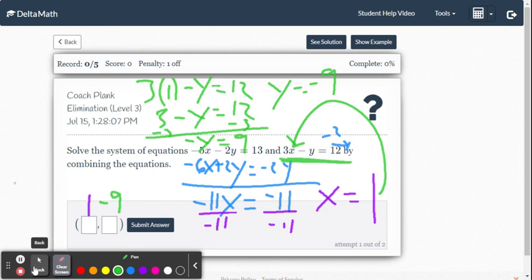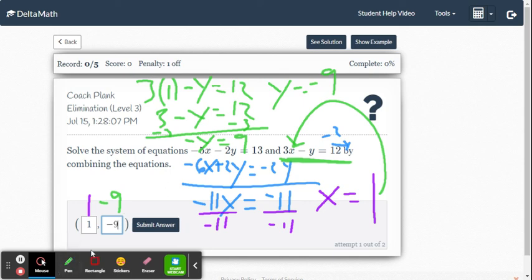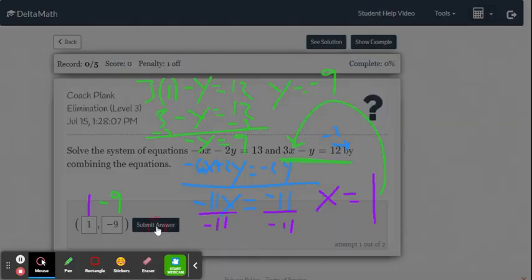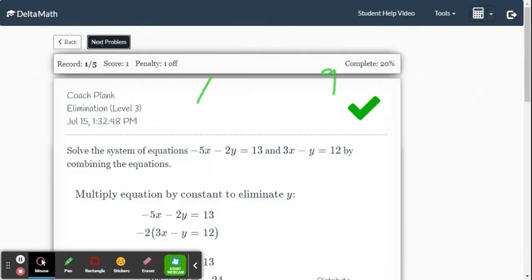So let's just double check our Delta Math. Make sure we did it right. So enter 1 for x, negative 9 for y. So the point of intersection is 1 comma negative 9. Let's take a look and green check mark.